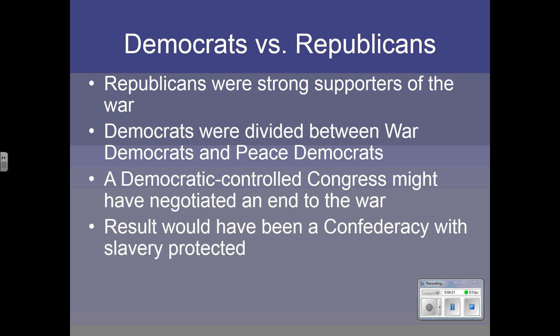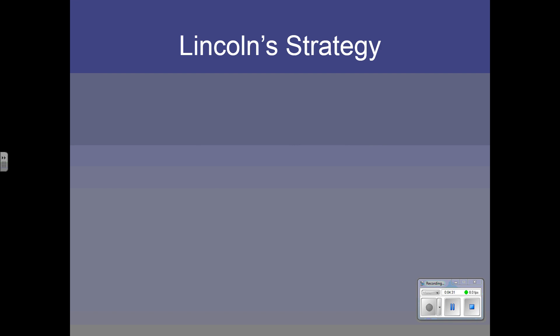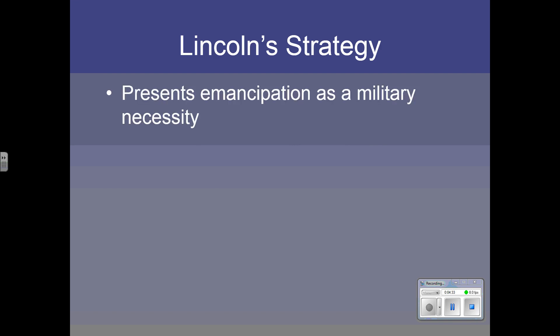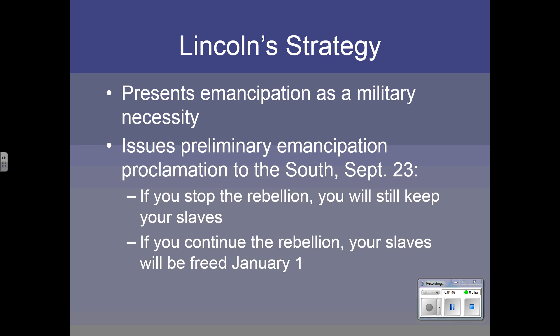So he's trying to prevent that result — a confederacy with slavery protected — but he's got to be careful and skillful about the way he goes about this. Lincoln was a master politician, and you'll see what I mean as we go through this presentation. When he did present emancipation to the nation, he said it's a military necessity — we need to do this to win the war. The slaves are being used by the South to promote their war effort, and we need to take that away from the South, just as we would take away their weapons.